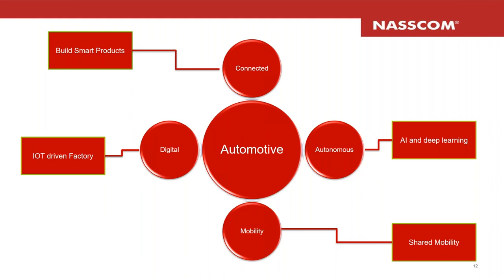Key initiatives in the automotive space include building smart products using digital technologies, IoT-driven factories, bringing in deep learning and AI for autonomous vehicle building, and shared mobility through mobile applications or collaboration platforms.